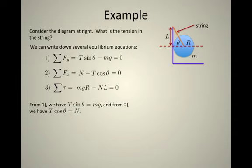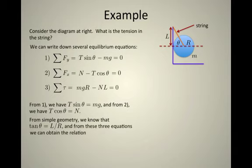From the first equation, we have T sin θ is mg, and from the second equation, we have T cos θ is the normal force. And we know from some easy geometry, the tangent of this angle θ is L over R. And so from these three equations, we have mg times the ratio R over L has to equal the normal force.